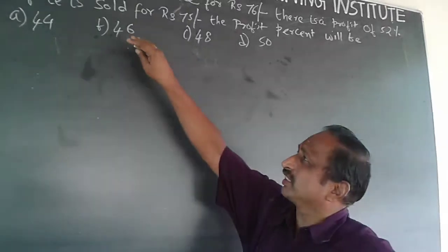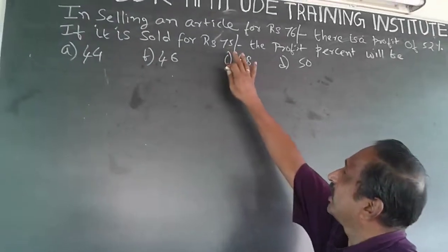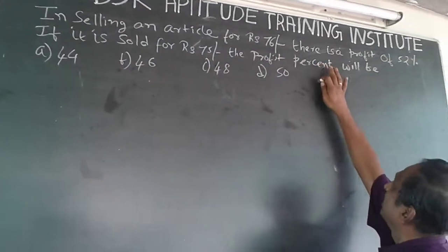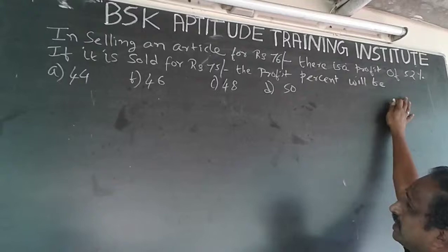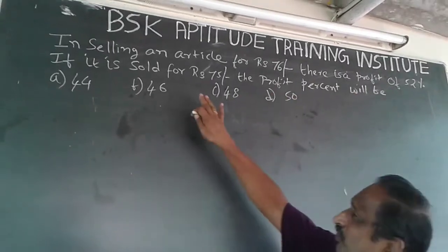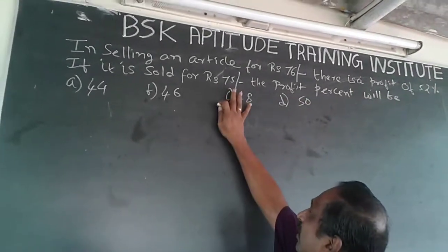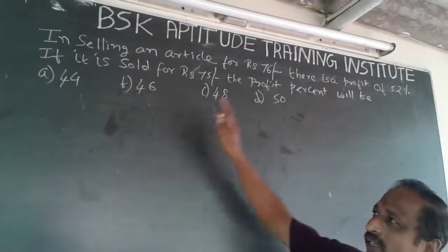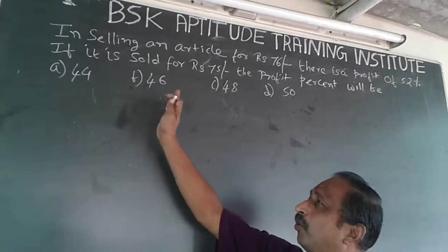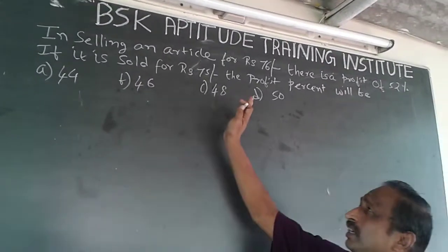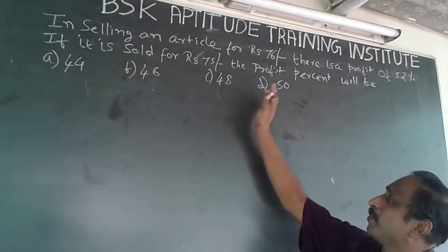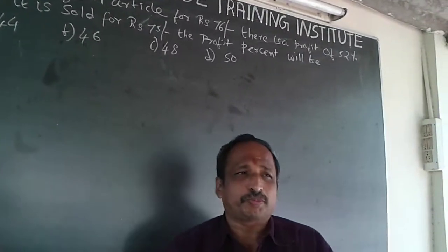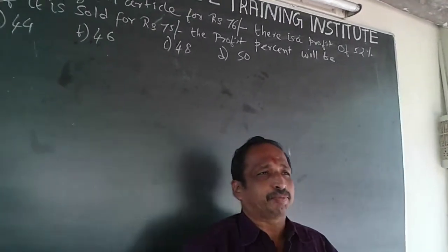What I am handling is: in selling an article for Rs. 76, there is a profit of 52%. If it is sold for Rs. 75, the profit percentage will be: A) 44%, B) 46%, C) 48%, D) 50%. This is the Cost Price and Selling Price problem.